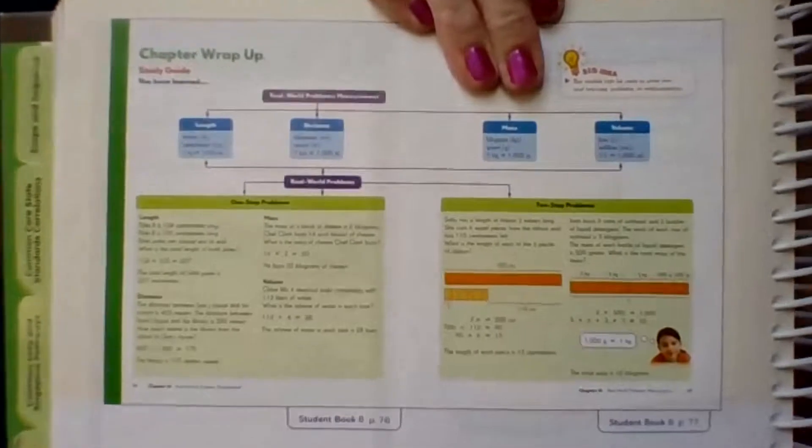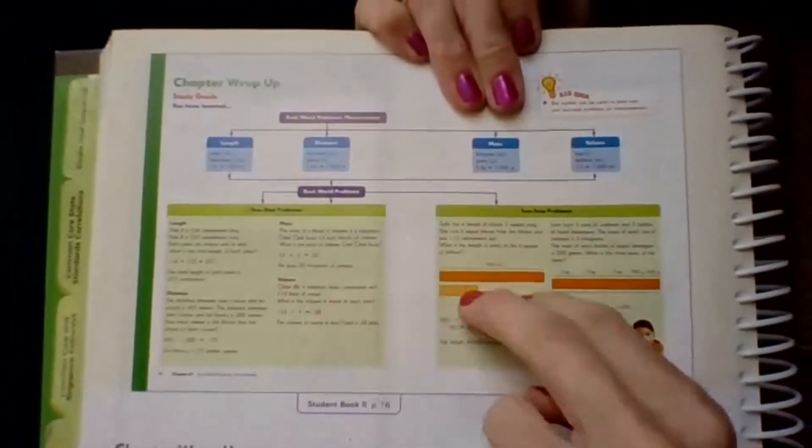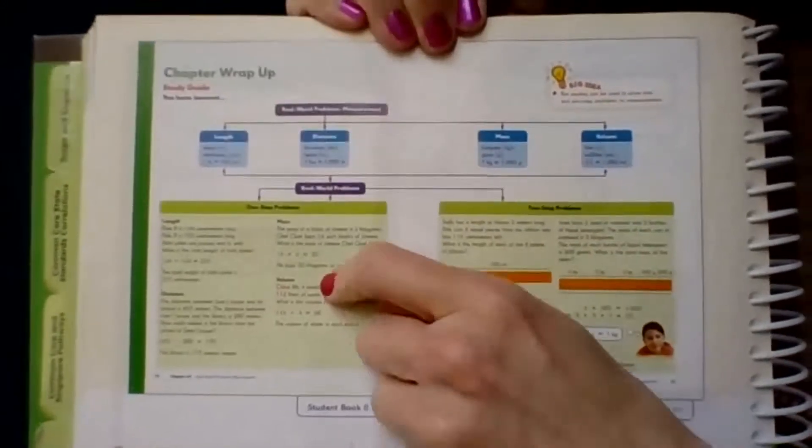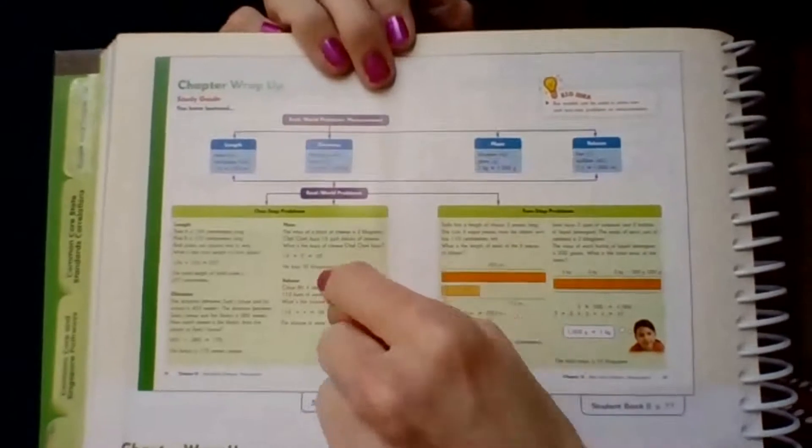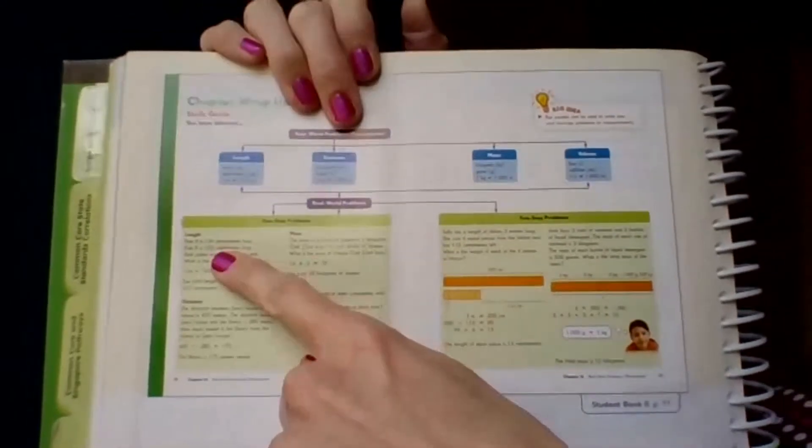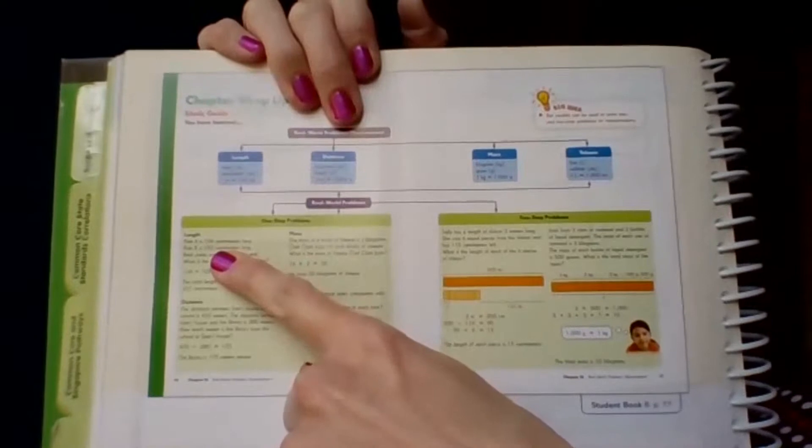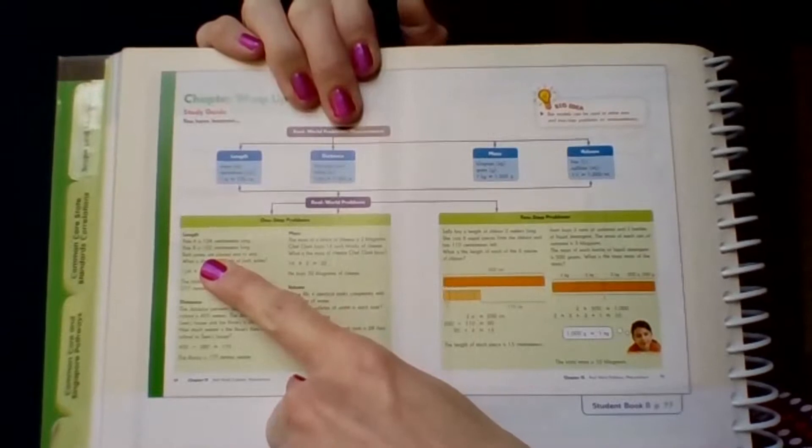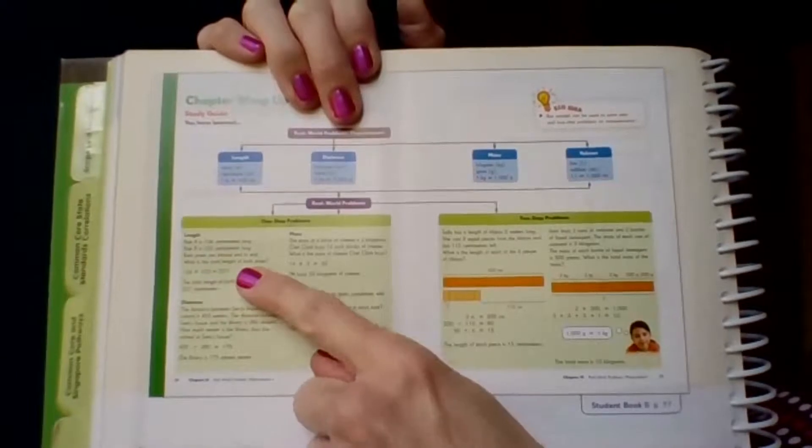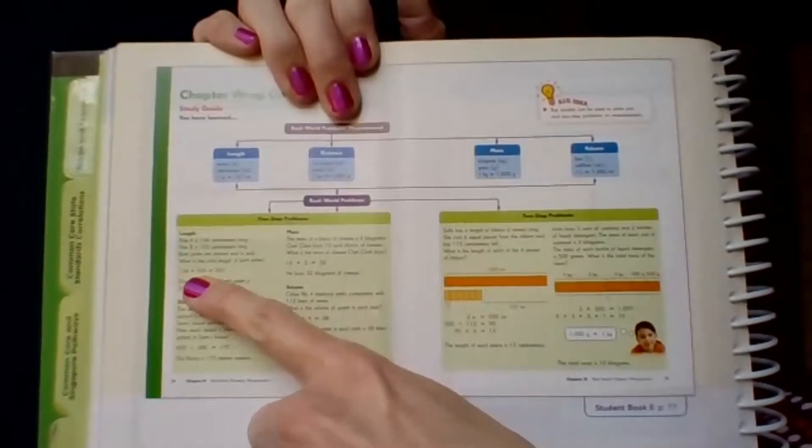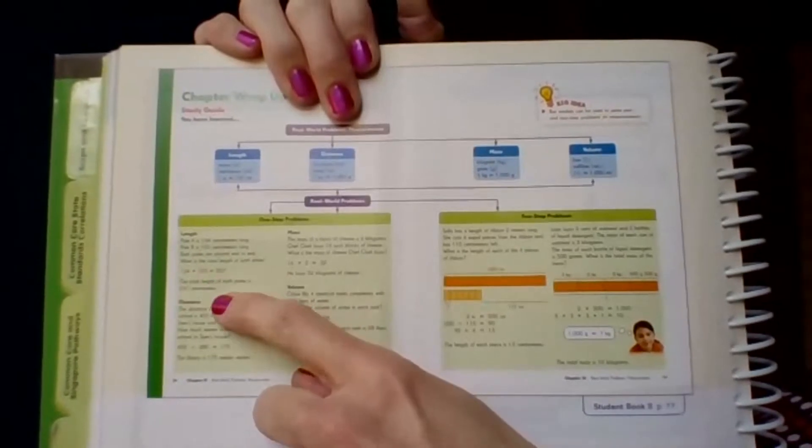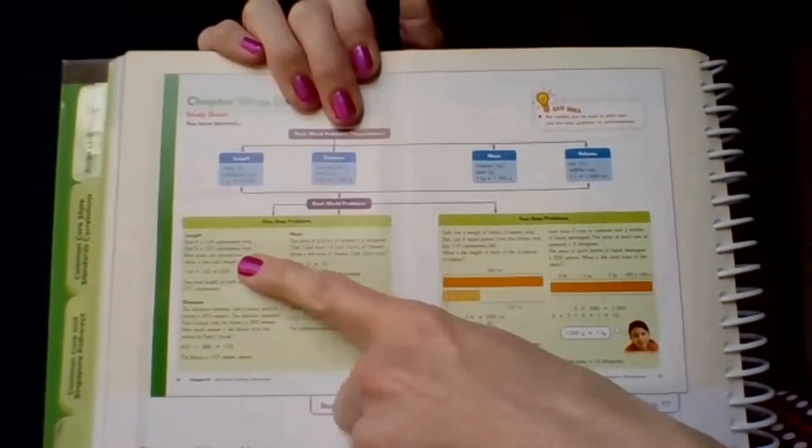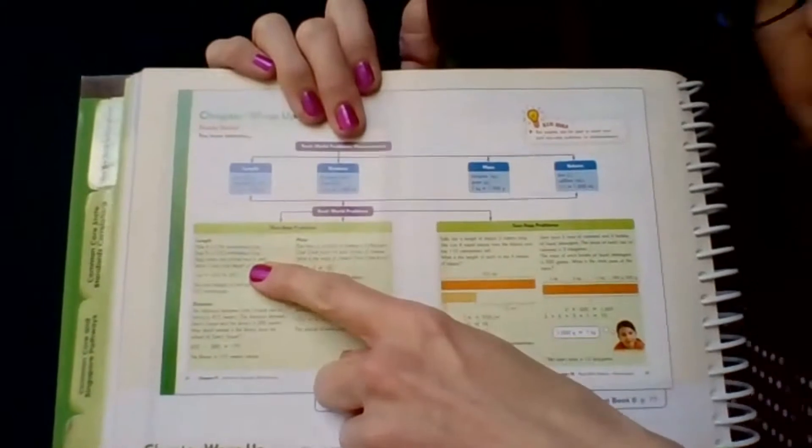There were two types of problems that we practiced solving. Real world problems for both, but with one step and two step. One step is a lot simpler, it's a lot less to think about. Let's review. Here's an example. Pole A is 134 centimeters long. Pole B is 103 centimeters long. Both poles are placed end to end. What is the total length of both poles? They added 134 plus 103 to get 237. The total length of both poles is 237 centimeters.